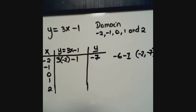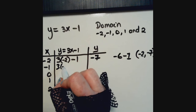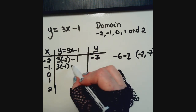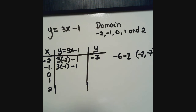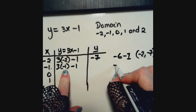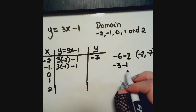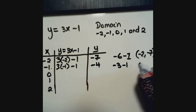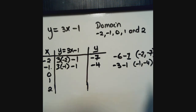Next, plug in x equals negative 1: 3 times negative 1 minus 1. Remember your order of operations — multiplication first, so 3 times negative 1 is negative 3, then negative 3 minus 1 equals negative 4. So when x is negative 1, y is negative 4, giving the ordered pair (negative 1, negative 4).